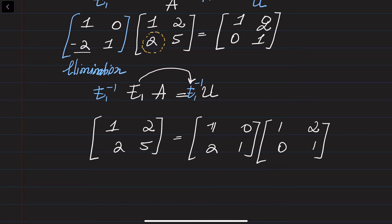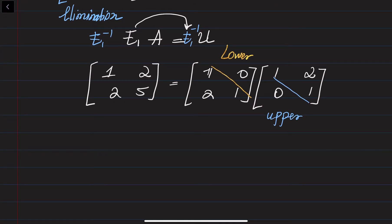So this matrix is a lower triangular matrix because all elements above the diagonal are equal to 0. And this matrix is the upper triangular matrix because all entries below the diagonal are equal to 0. We've been able to write down matrix A as the multiplication of L, the lower triangular matrix, and U, the upper triangular matrix. We can apply this decomposition to solve systems of linear equations much more easily. Now let's discuss how we can bring bigger matrices into LU form.